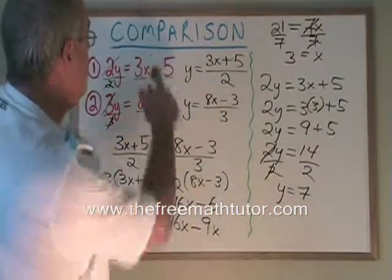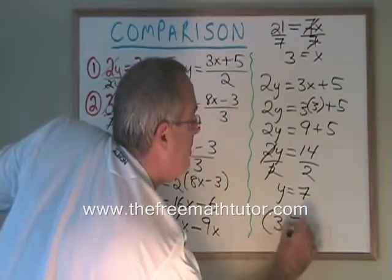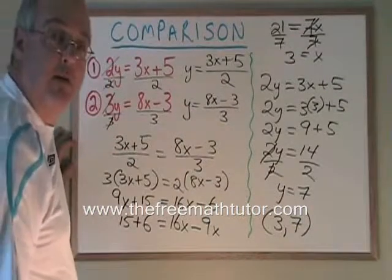Therefore, the point at which these two lines cross is x equals 3, y equals 7. This is how we use comparison.